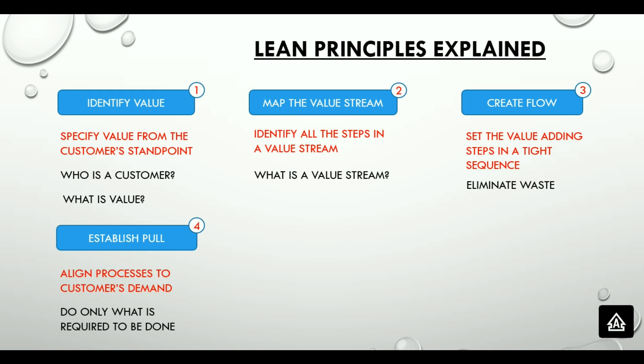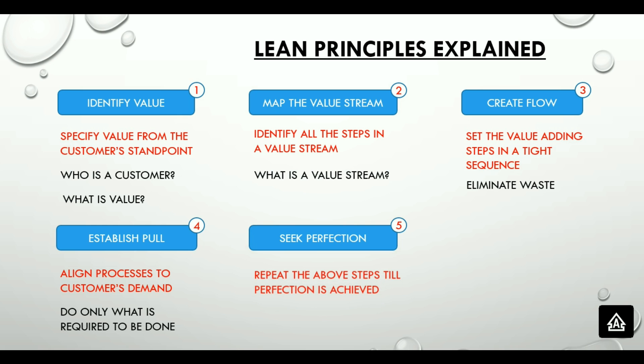The last step in the lean cycle is seeking perfection. It means that once the first four steps are in place, reiterate until a state of perfection is reached. While true perfection can never be reached, a lean organization always strives towards perfection.